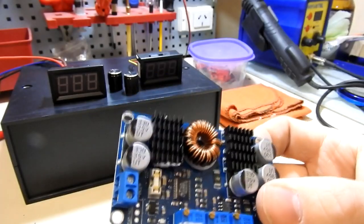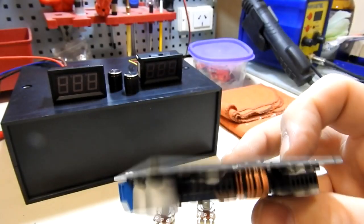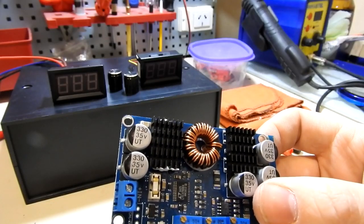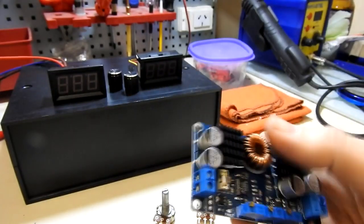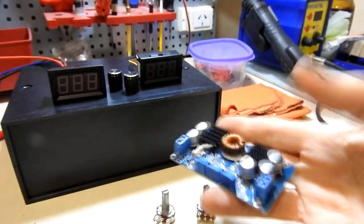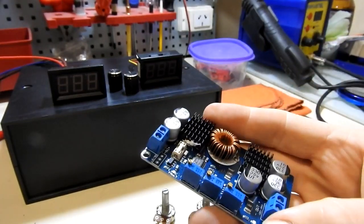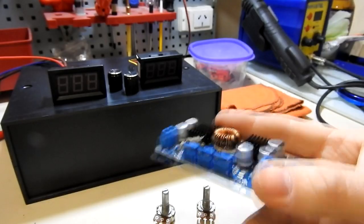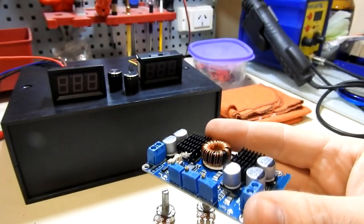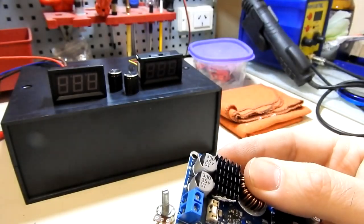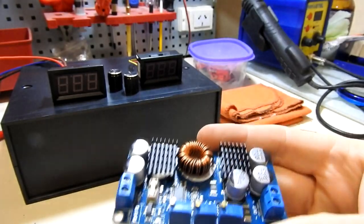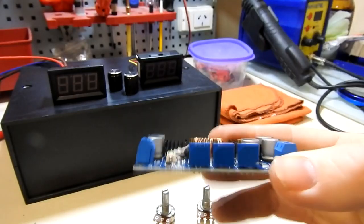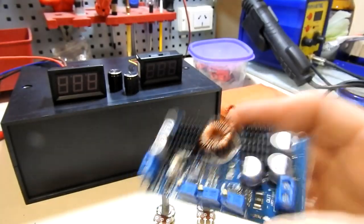Yo creo que utilizando dos potenciómetros, vamos a poder regular el voltaje y la corriente constante de salida que es lo que queremos que esto nos entregue. Si bien esto parece chico, es bastante cojonudo. Por lo que tengo entendido en las especificaciones, soporta unos cuantos amperes. Y si se le va a dar un uso intenso, recomiendan ponerle algún ventilador, algún disipador.